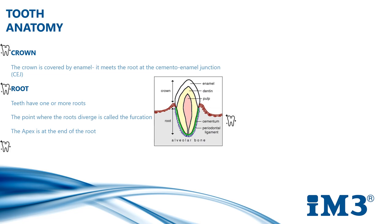Teeth have one or more roots. The point where the roots diverge is called the furcation. Depending on the number of roots the tooth has, this can be a bifurcation or a trifurcation. The apex is at the end of the root, which has a multiple canal foramen to carry blood vessels, nerves and lymphatics into the pulp.